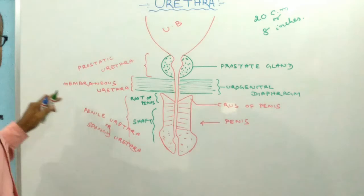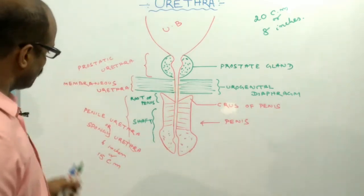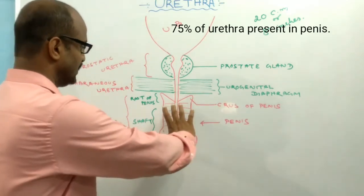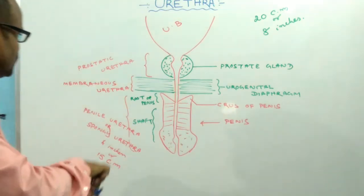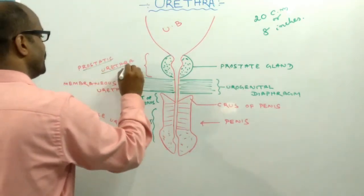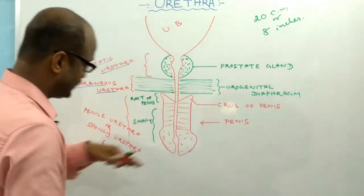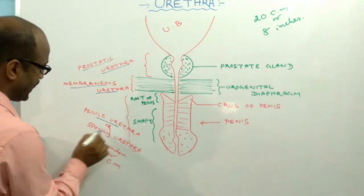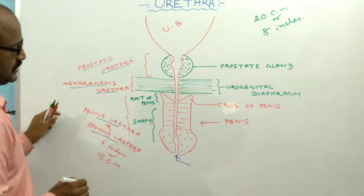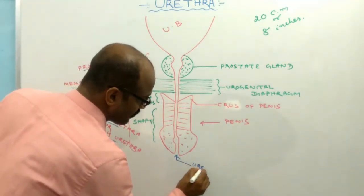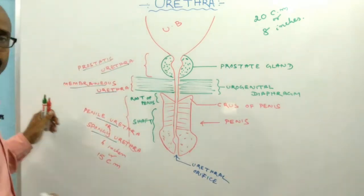The length of the spongy urethra is 6 inches or 15 cm, which is restricted inside the penis. On the basis of location, the urethra is divided into 3 parts: the portion surrounded by the prostate gland is the prostatic urethra; the portion present in the urogenital diaphragm is the membranous urethra; and the portion present inside the penis is the penile urethra or spongy urethra. The urethra communicates to the outside through an opening known as the urethral orifice, present at the tip of the penis.